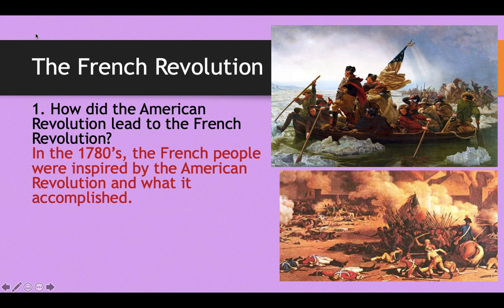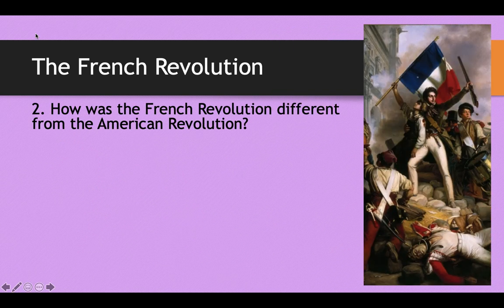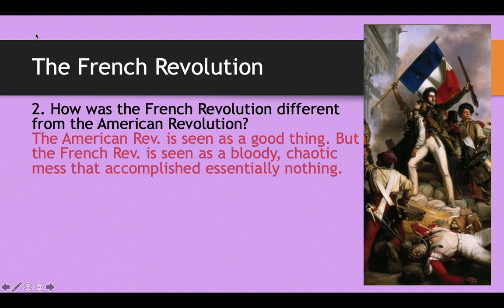In the 1780s, the French people were very inspired by what the American Revolution was able to accomplish, and they wanted a revolution of their own. They wanted to, like the Americans did, replace their authoritarian monarchy and have a freer society like the United States was able to become. But the French Revolution ended up being much, much different from the American Revolution.